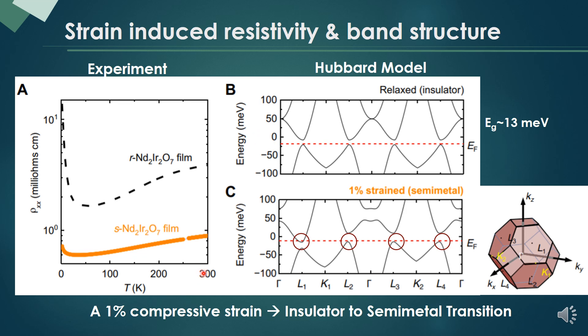First, we can measure the temperature against the resistivity. This black line is for relaxed film and this orange line is for strained film. You can see the strained film is much more semimetallic than the relaxed film.